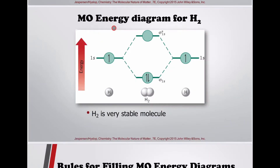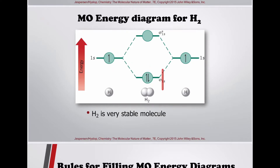Molecular orbital energy diagram for H₂: the energy axis shows one 1s electron from each hydrogen atom. Combining 1 plus 1 gives 2 electrons total, which fill the bonding sigma 1s orbital. The anti-bonding sigma 1s remains empty. H₂ is a very stable molecule.